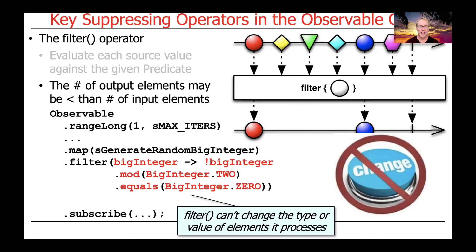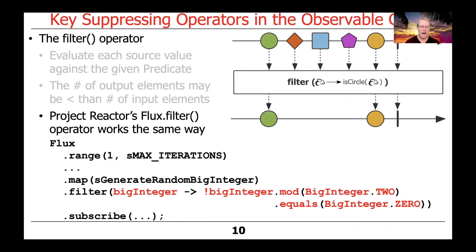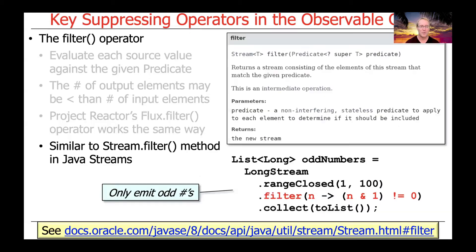Note also that filter can't change the type or the value of the elements that it processes. Project Reactor has a filter operator in its flux class that behaves the same way as the filter operator does in the observable class for RxJava, and this example is pretty much identical except it's using a flux rather than an observable. Both of these operators are very similar to the stream filter method in the Java streams class, and this example will only emit odd numbers — just a different way of doing that using Java streams.